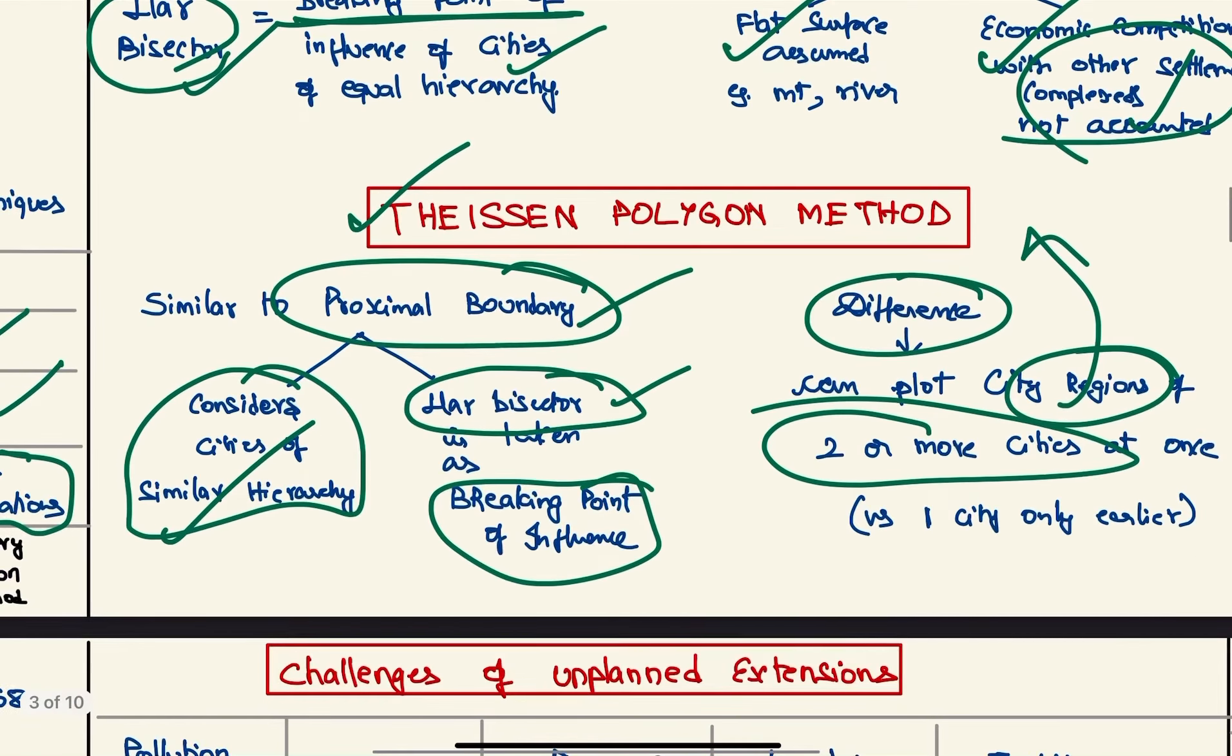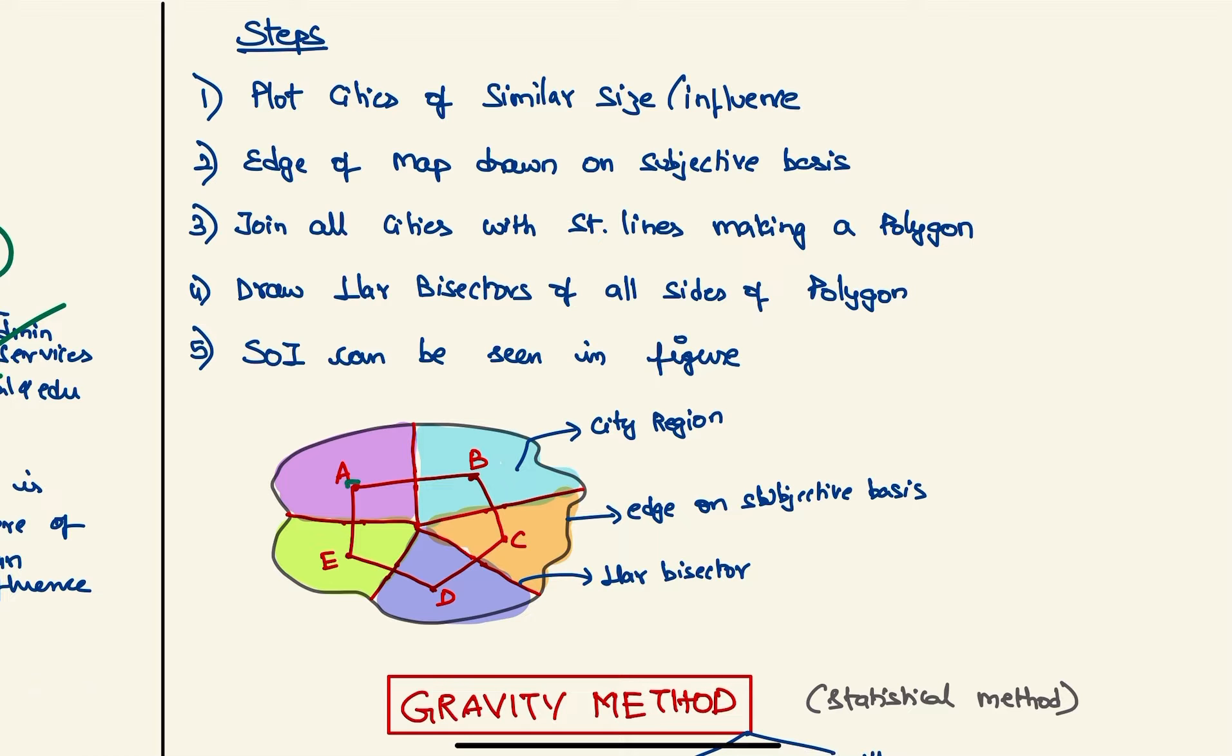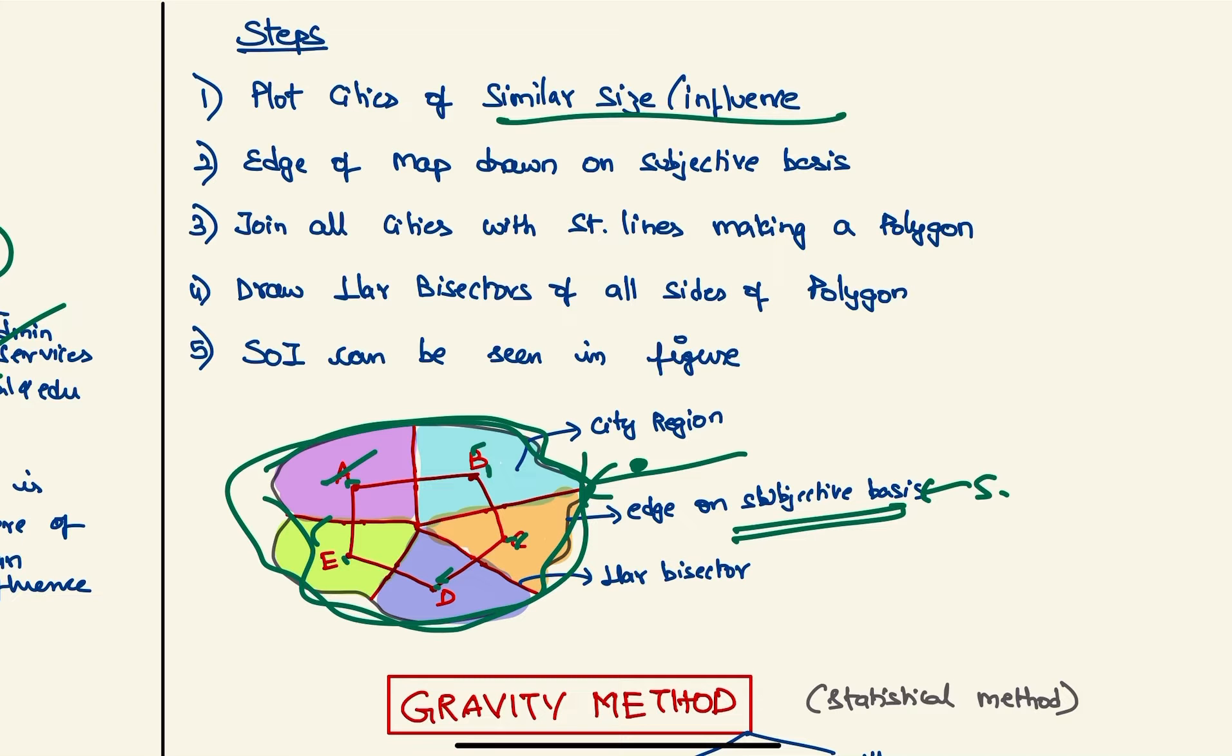So Thiessen polygon method steps are: first, plot the similar cities—that is A, B, C, D, and E—which are of similar size of influence. Next, the edge of the map is drawn on the basis of subjective basis, like survey, etc. We draw the edge of the map; that is, beyond this there won't be any influence of any of these cities. Next, we join all these cities using straight lines and make a polygon.